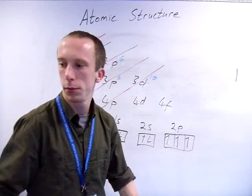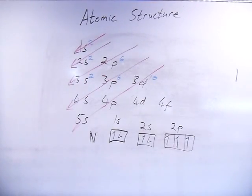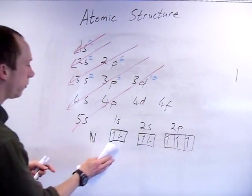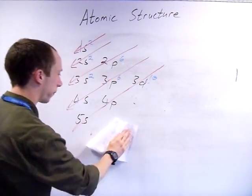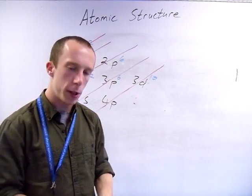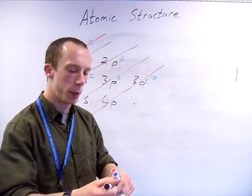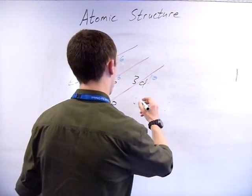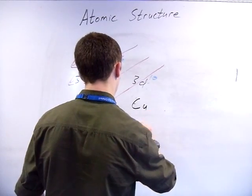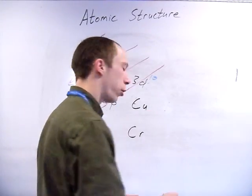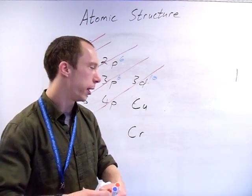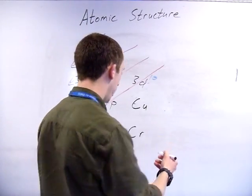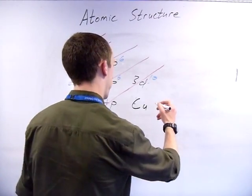There are two exceptions for the electronic configuration which you need to be aware of: chromium and copper. So how these actually fill up - if I remember right, chromium... copper is bigger.